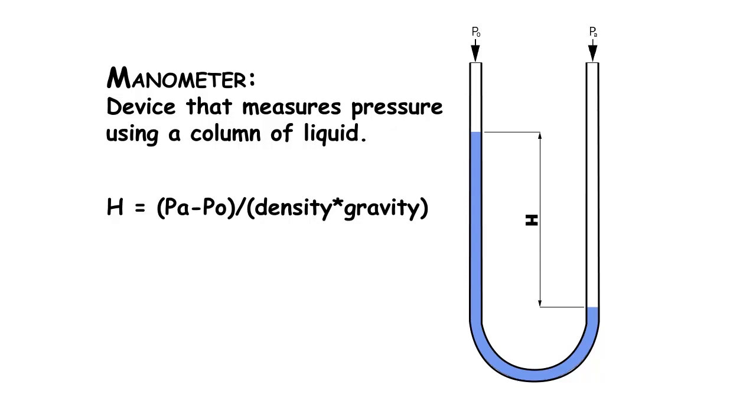A manometer is a device that measures pressure using a column of liquid. You see, it just so happens that the height of a column of liquid is perfectly proportional to the pressure divided by the density of the liquid.